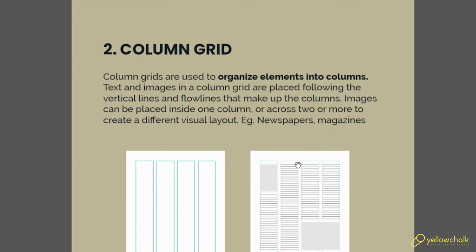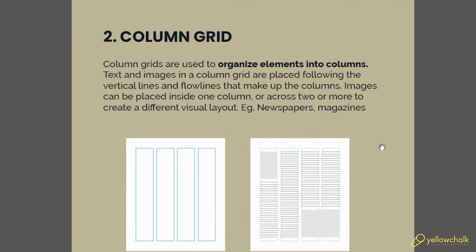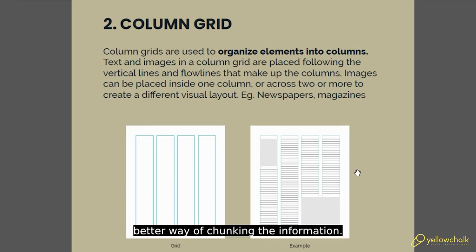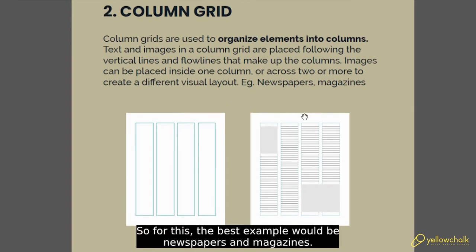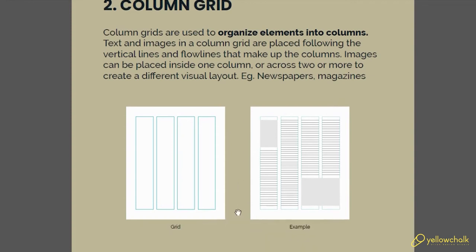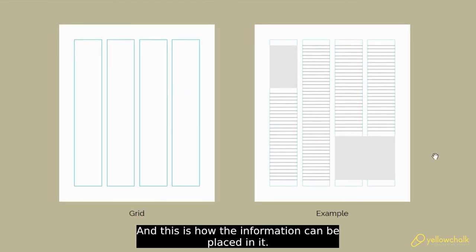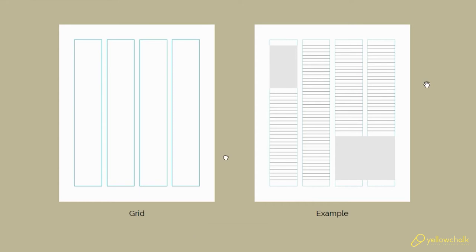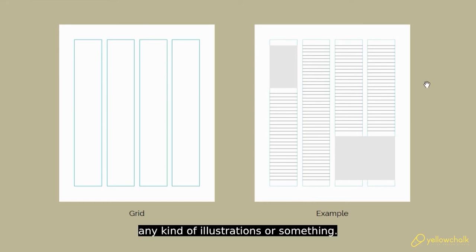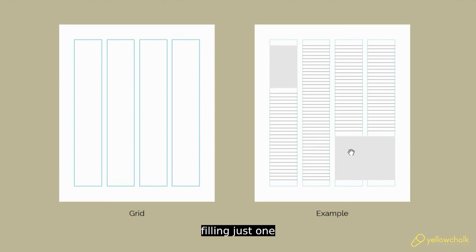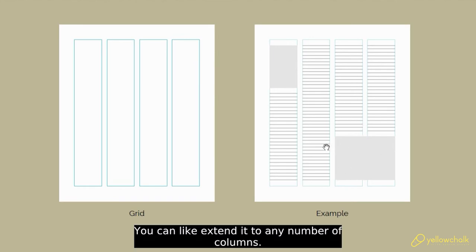The next type is the column grid. Instead of one whole grid, it is divided into columns so that there is a better way of chunking the information. The best example would be newspapers and magazines. As you can see, this is a four-column grid and this is how the information can be placed in it. When placing images or illustrations, there is no rule to follow just one column — you can extend it to any number of columns — but text is preferably kept completely in one column.